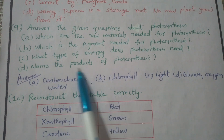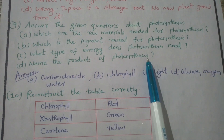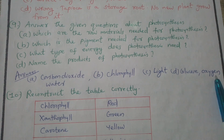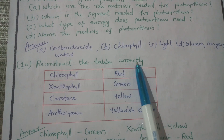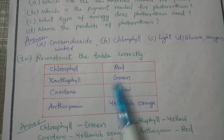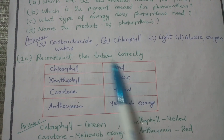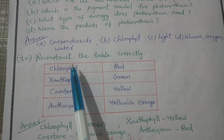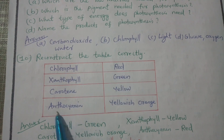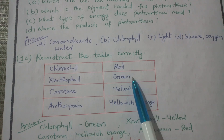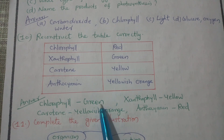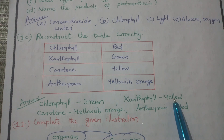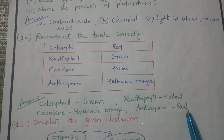Name the products of photosynthesis — glucose and oxygen. Reconstruct the table correctly: the pigment chlorophyll has the color green; carotene is the color yellow; xanthophyll is the color yellow; anthocyanin is red.